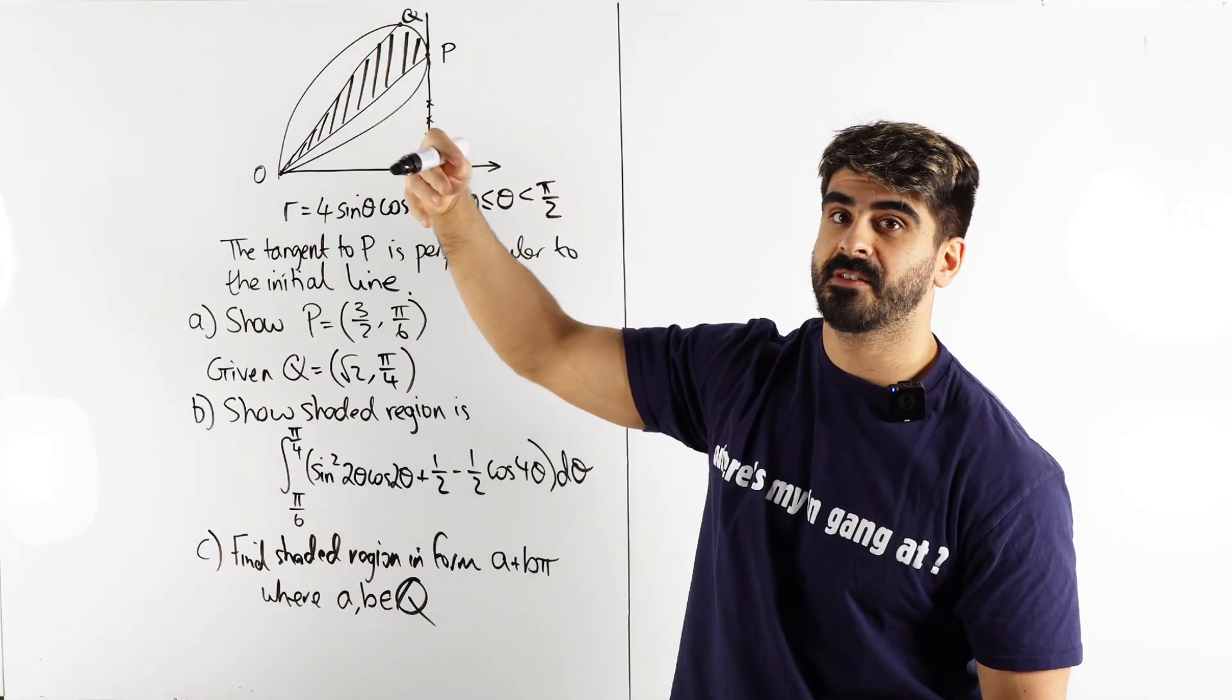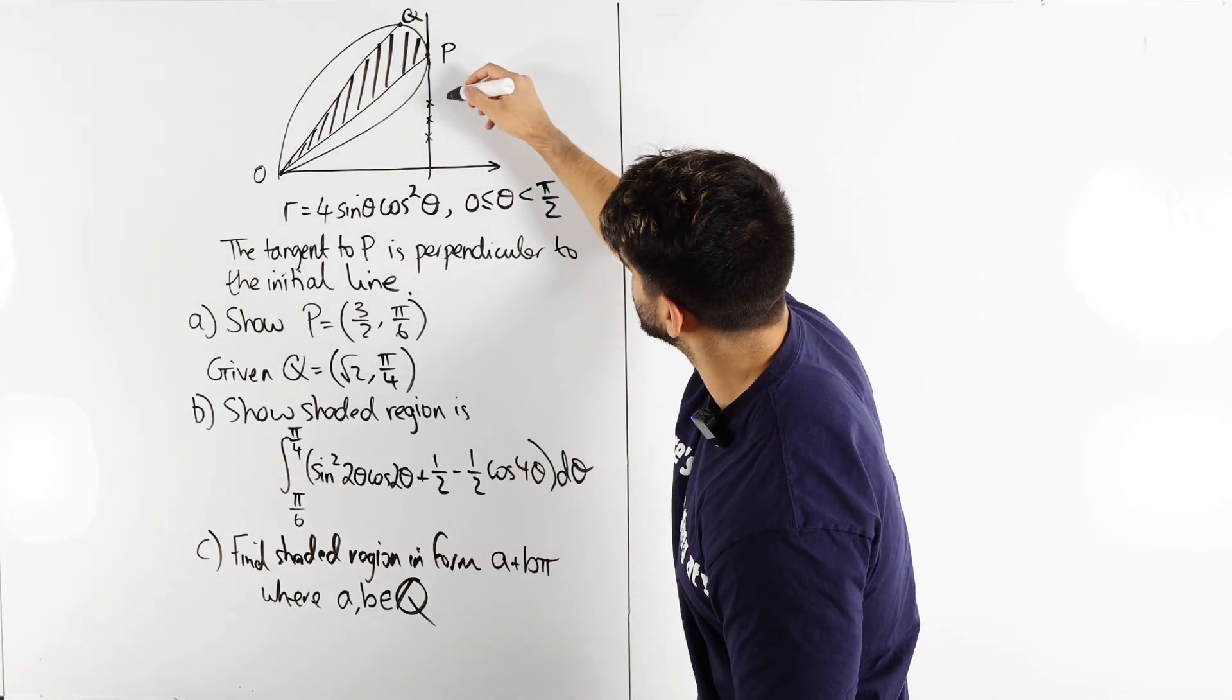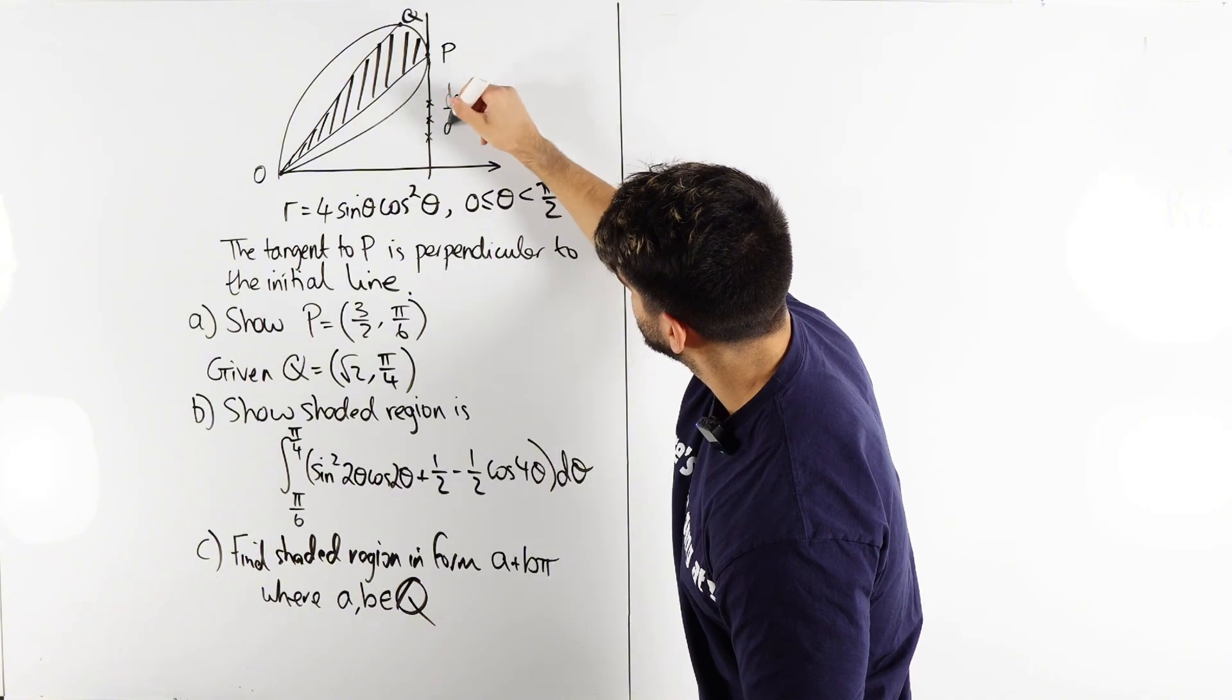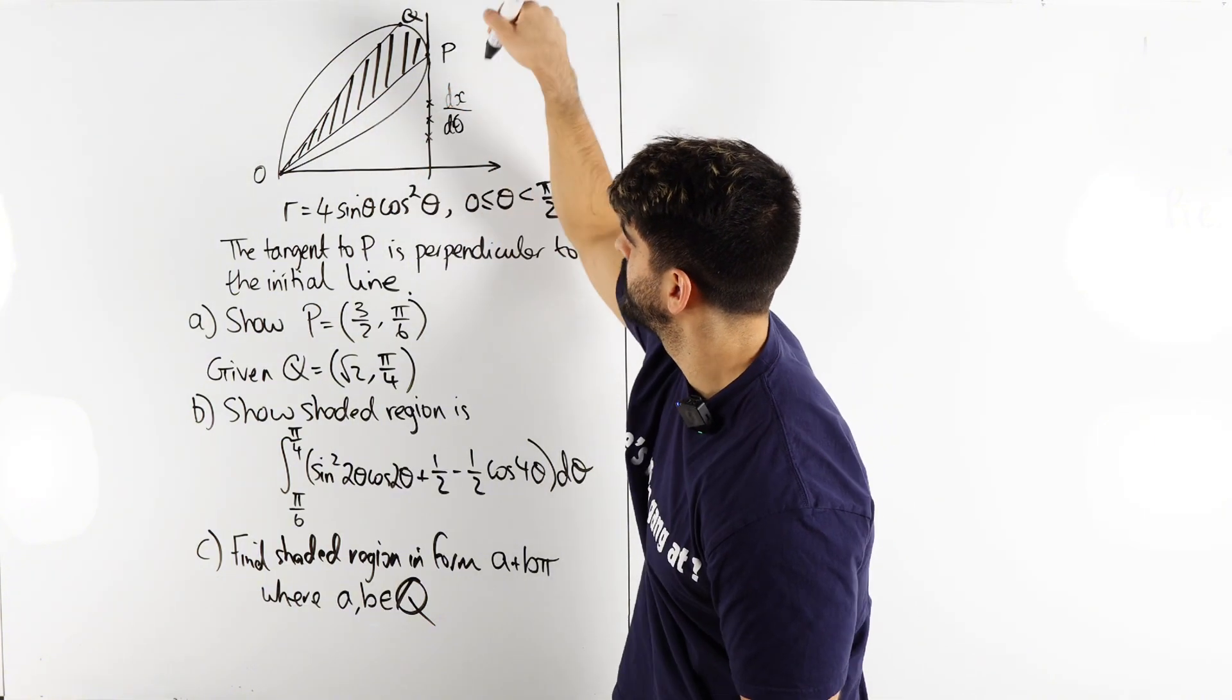Fixed x value means that the x value does not change. Does not change means the rate of change of the x values with respect to theta as theta changes is zero.